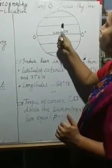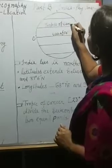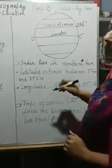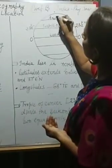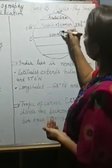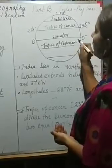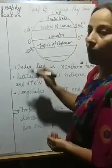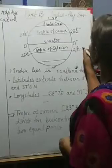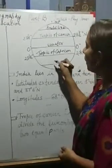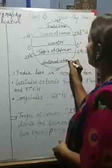Moving upward from the equator, the next important line at 23 and a half degrees north is known as the Tropic of Cancer. Remember: 23 and a half degrees north denotes the Tropic of Cancer. Moving further upwards is the Arctic Circle, and then the North Pole. Moving downward from the equator, the line at 23 and a half degrees south is known as the Tropic of Capricorn. And moving further downwards is the Antarctic Circle, and then the South Pole.